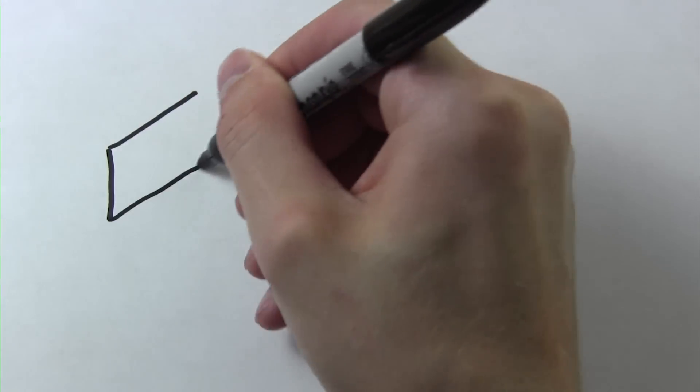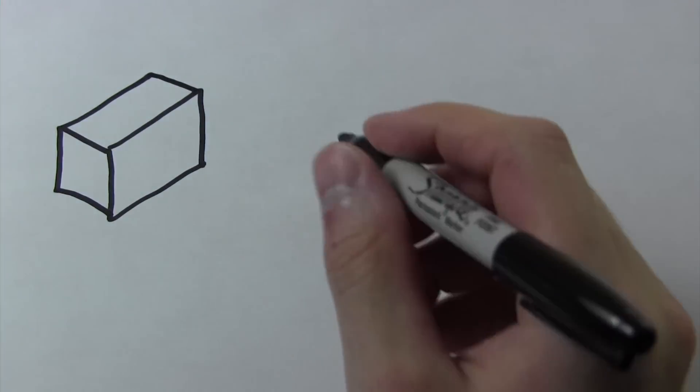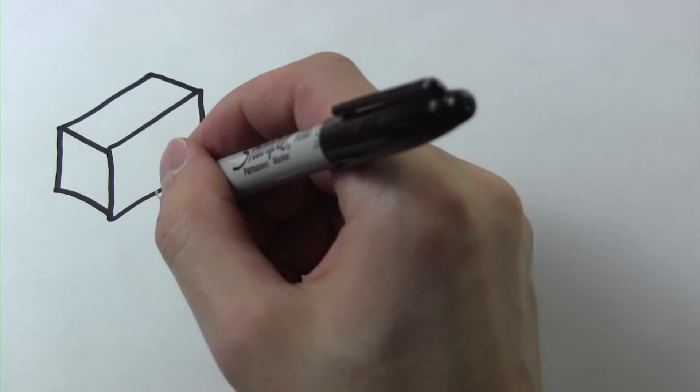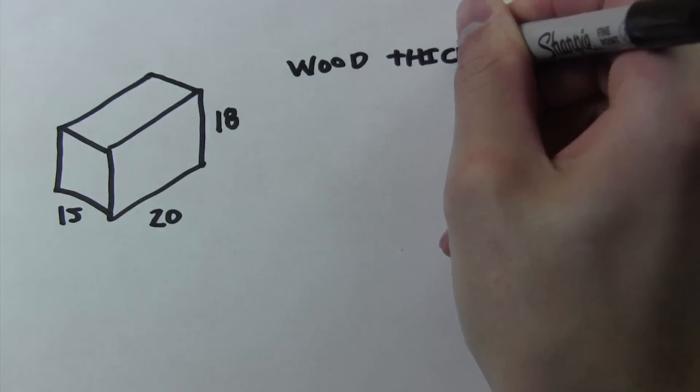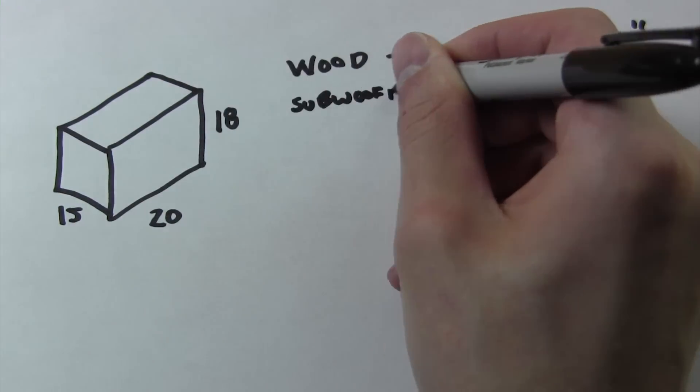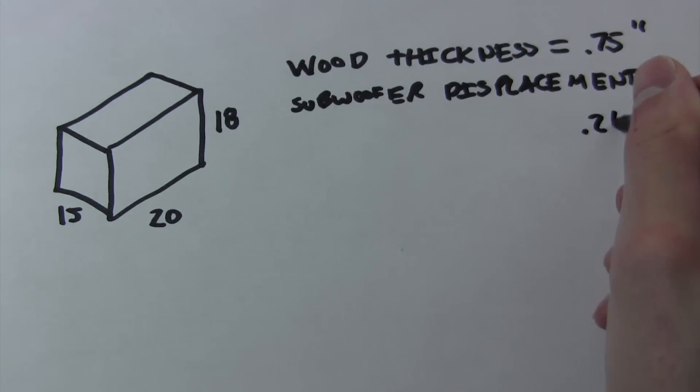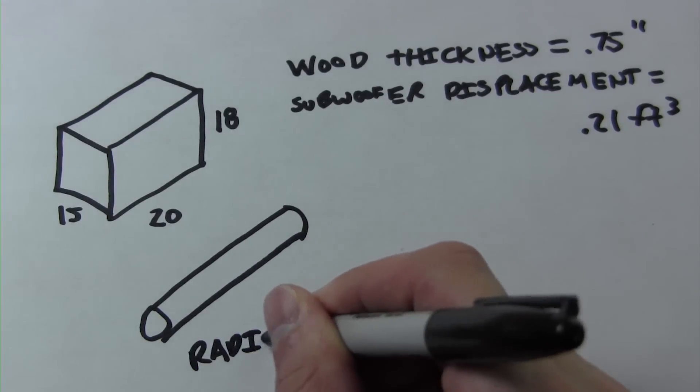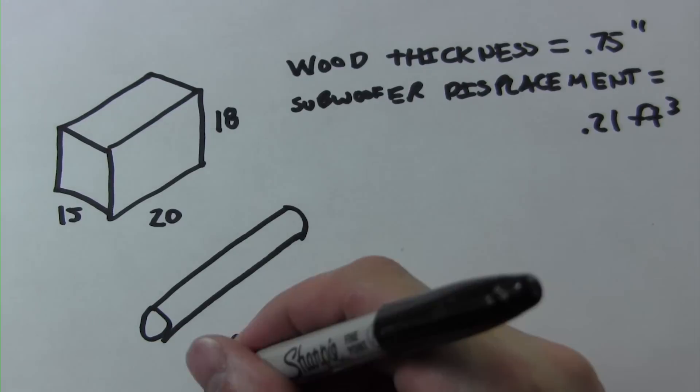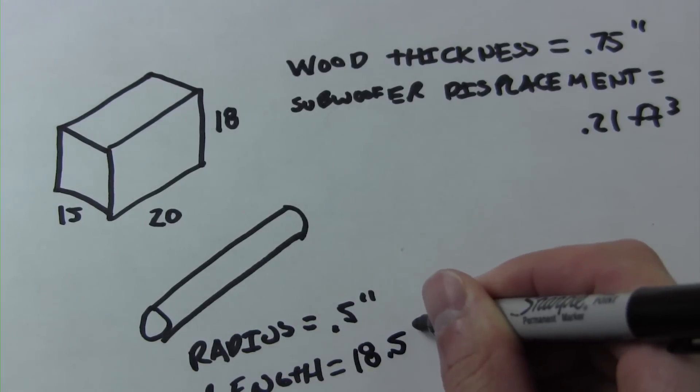Now for your homework problem. Let's say you're given a sealed subwoofer enclosure that has external dimensions of 18 inches by 20 inches by 15 inches. The wood thickness is 3 quarters of an inch and the subwoofer displacement is 0.21 cubic feet. There is also a cylindrical brace going across the enclosure that has a radius of a half inch and a length of 18 and a half inches.